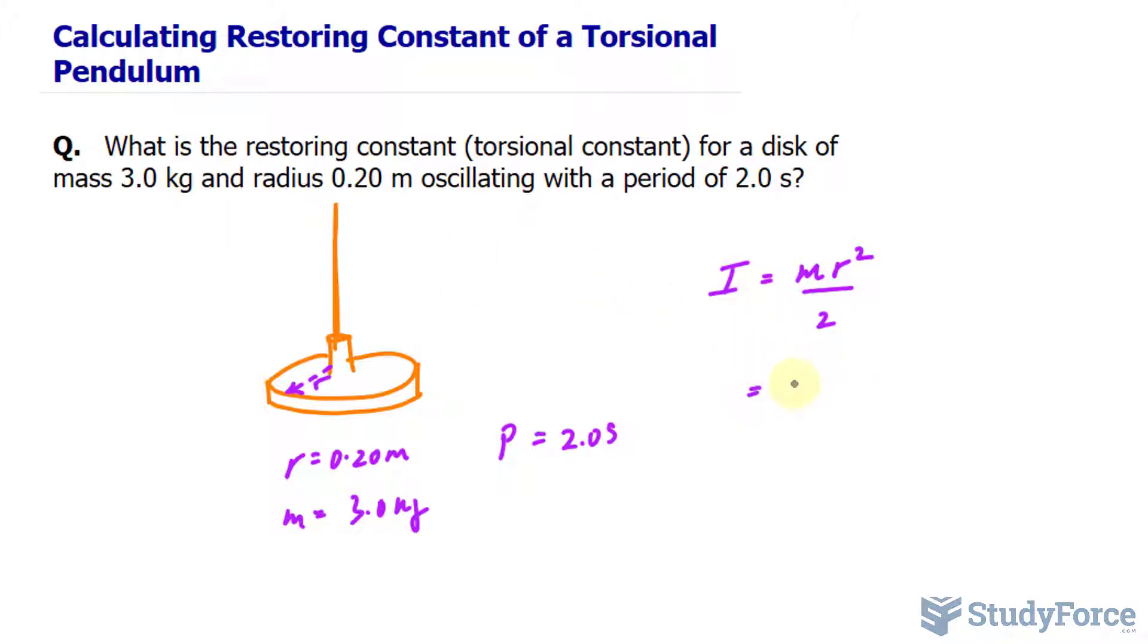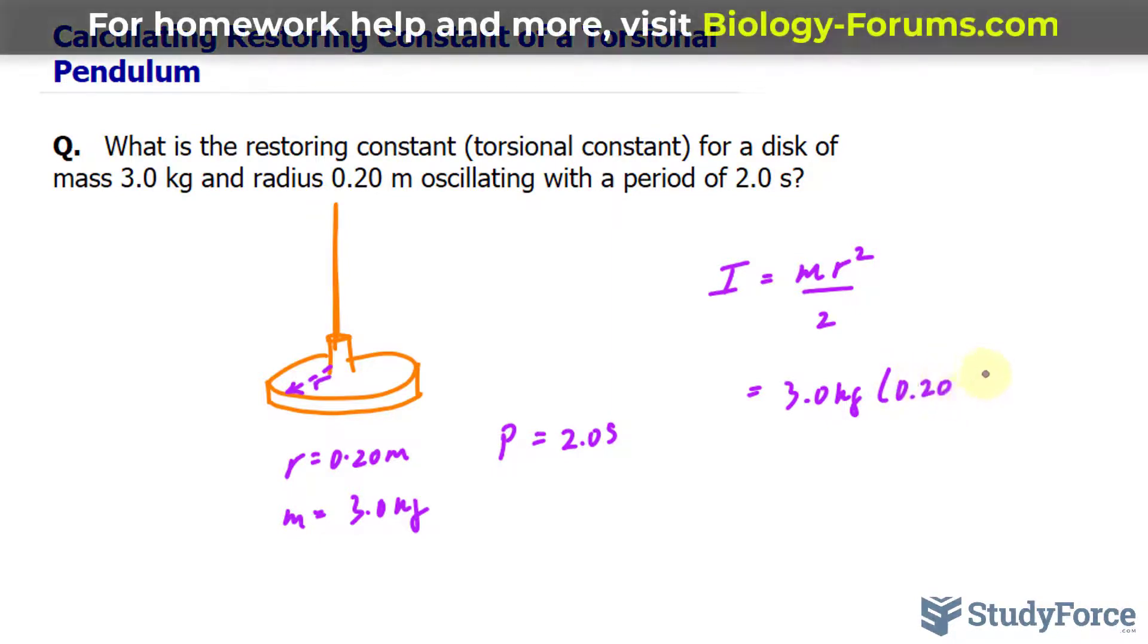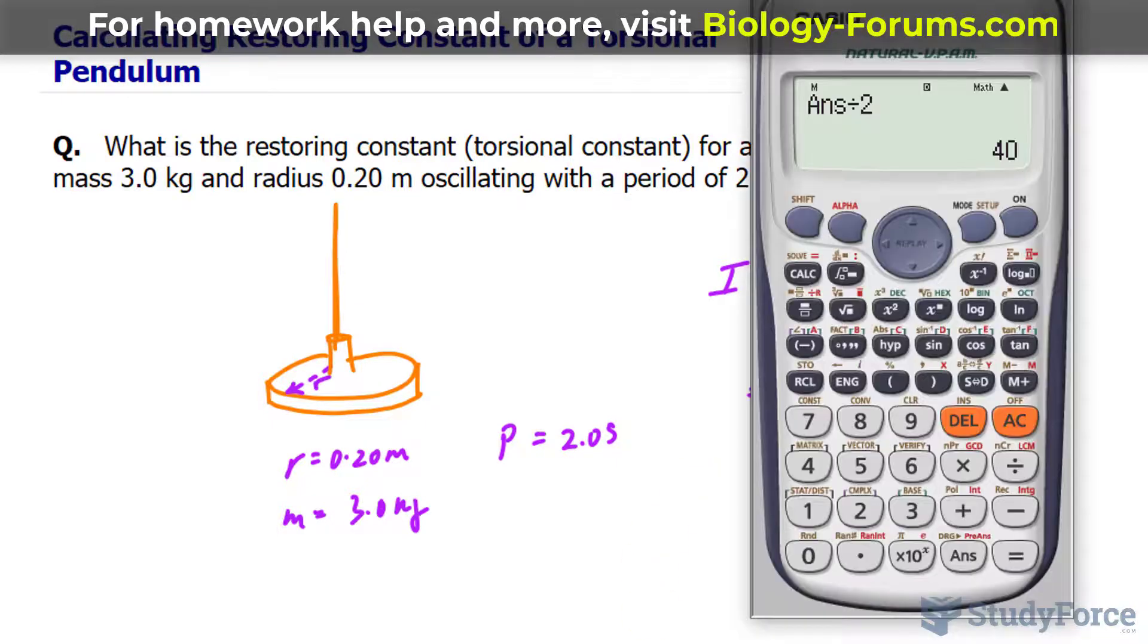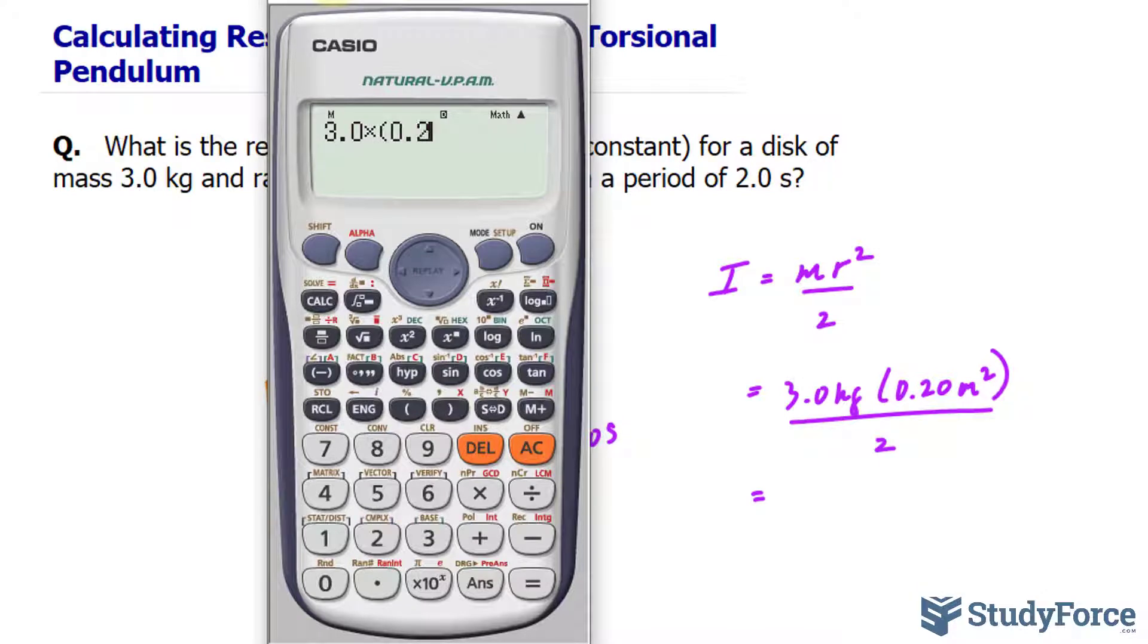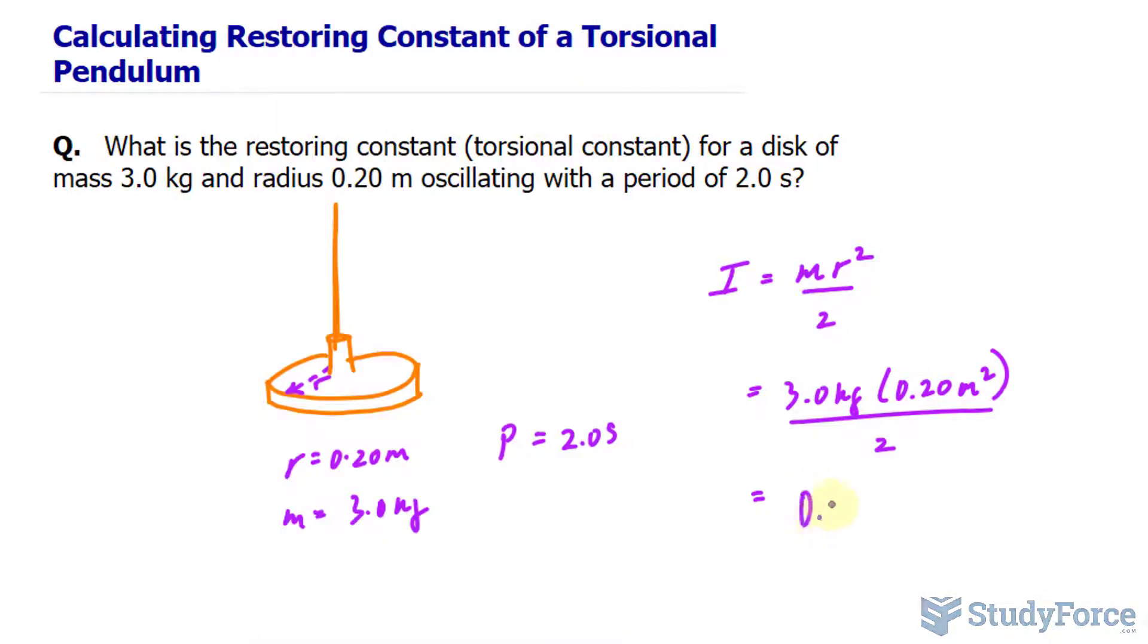I'll substitute values that I know, 3.0 kilograms, and we have a radius that is 0.20 meters squared over 2. All right, we have 3.0 times 0.2 to the power of 2 divided by 2, and we end up with 0.060, and that's the two significant figures. So, the units are kilograms times meters squared.